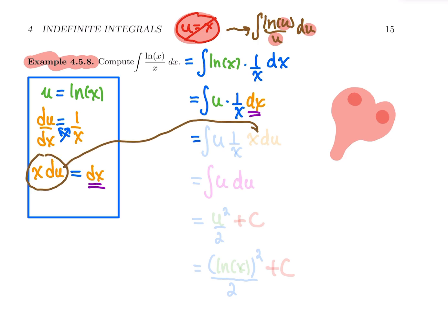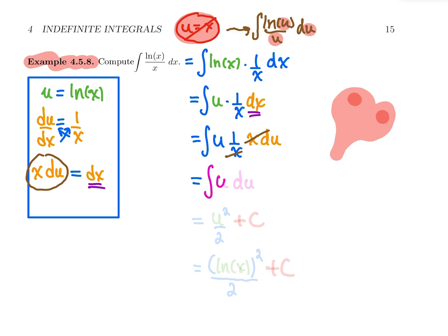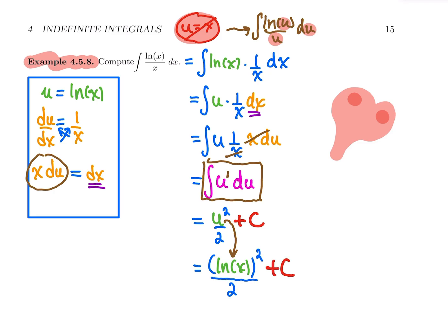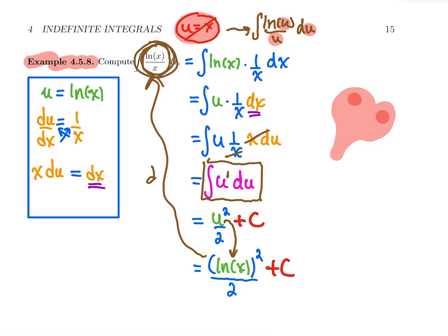So dx blows up into x du, and the two x's cancel, leaving the clean basic integral of u du, where u is to the power one. Applying the power rule gives u squared over two plus c. Replacing u with the original formula, that's ln x, squared, divided by two, plus c. As a check for a fun Friday night: computing that derivative uses the power rule giving two times ln x to the one times one over x — the twos cancel, leaving ln x over x. It works perfectly. That's it for this example.